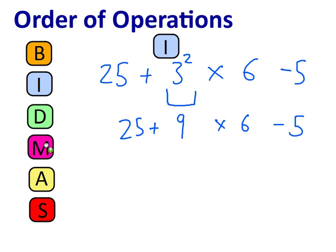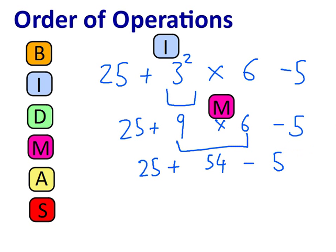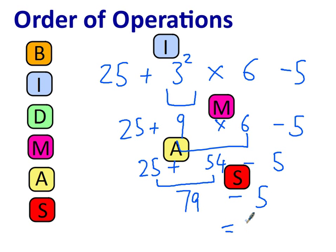What have we got now? We've got a multiplication there in the middle, the most important out of what's left. And that equals 54. So 25 plus 54 take away 5. What have we got? We've got an addition. So 25 plus 54 is 79. That bit there. And we still have to take away 5. Poor subtraction, last again. You get 74.